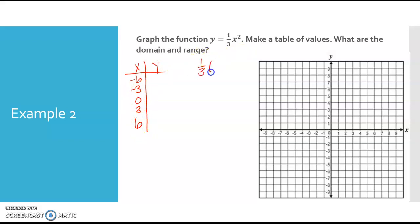So we've got 1/3 of negative 6 squared. So negative 6 squared is 36. So now I have 1/3 of 36, and 1/3 of 36 is 12. So when x is negative 6, y is 12.